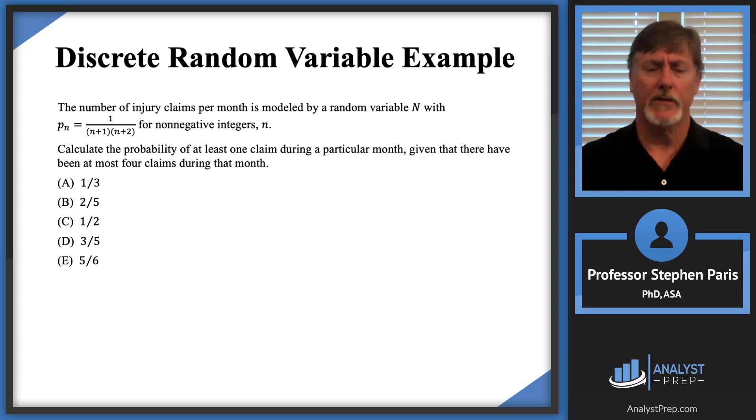In this example, the number of injury claims per month is modeled by a random variable N with P_N = 1/[(n+1)(n+2)] for non-negative integers n. Let's remember that the P_N value is the probability that the random variable N equals that specific n value.